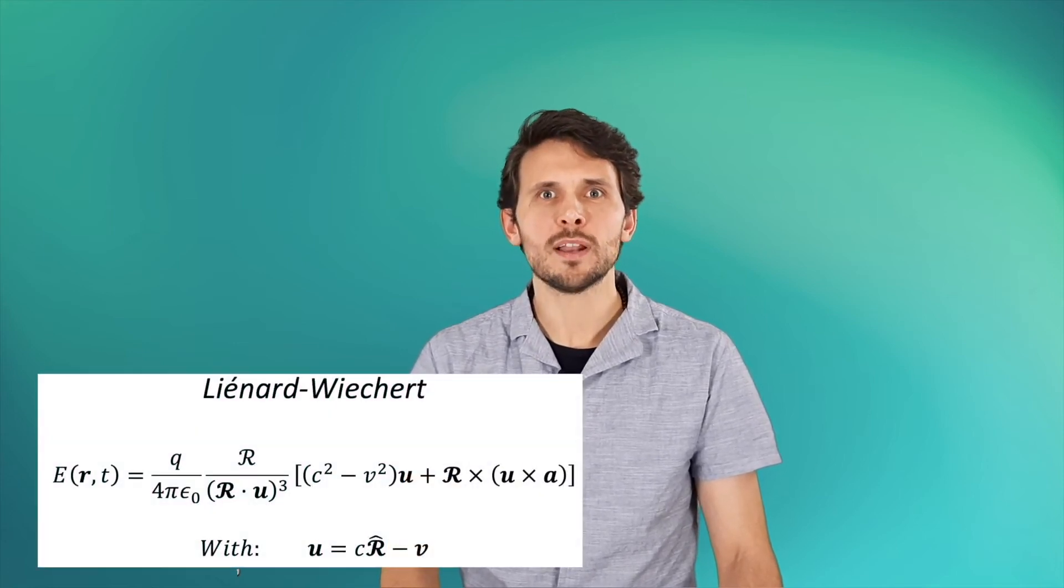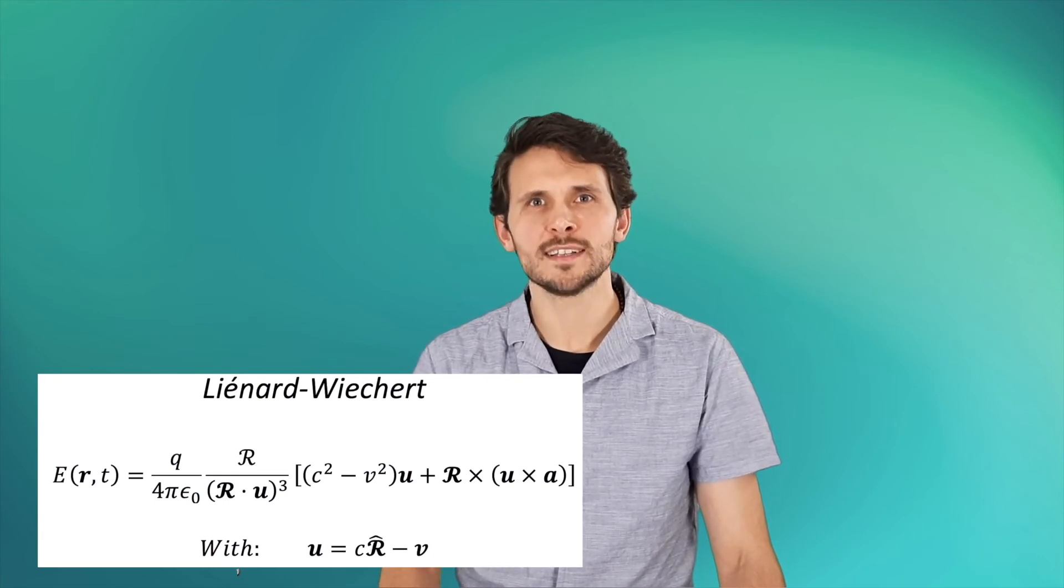Instead we have to apply the following equation which applies to a charge in arbitrary motion. This is known as the Lienard-Wiechert field. So we just learned that the field always points towards the charge when the velocity is constant. In this case we can use the real position of the charge and Heaviside's equation.